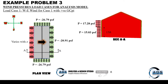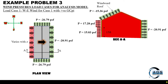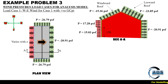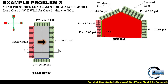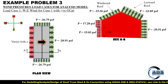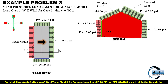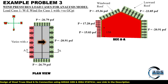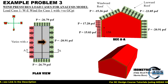When we cut section AA, the windward wall pressure, leeward wall pressure, windward roof pressure, and leeward roof pressure are all shown — visualization is very important here. Observe that wind is blowing from west to east. Since the roof has two parts, the left part becomes the windward part and the right part becomes the leeward part for this wind direction. When we see the isometric view, the corresponding pressures are shown.